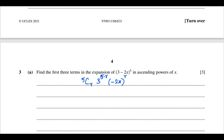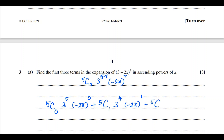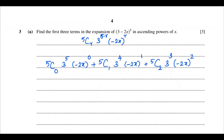The first three terms correspond to r = 0, 1, and 2. First term: 5C0 × 3^5 × (-2x)^0. Second term: 5C1 × 3^4 × (-2x)^1. Third term: 5C2 × 3^3 × (-2x)^2. Since 5C0 is 1, the first term is 3^5.